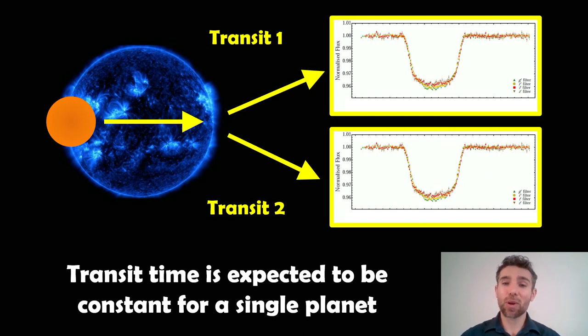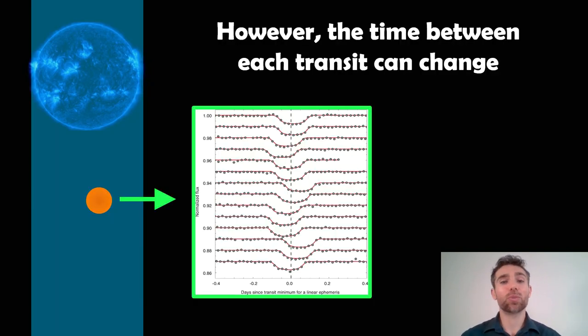Now if it's a single planet, we would expect that each time it goes in front of the star, the time between each transit would be the same. But that's not always the case. You can have multiple planets in the system which can alter when they occur. There's various different reasons as to why that can change. But this is an example here. Each transit is not at the same time. Sometimes they're early, sometimes they're late.